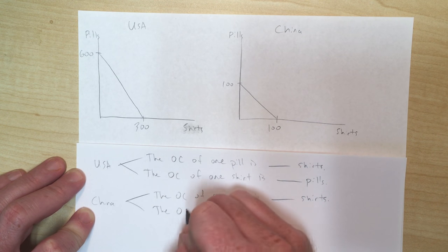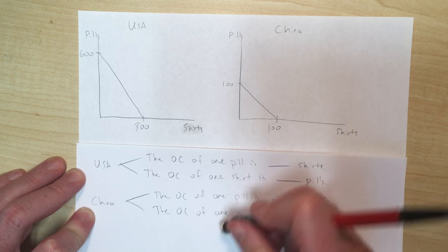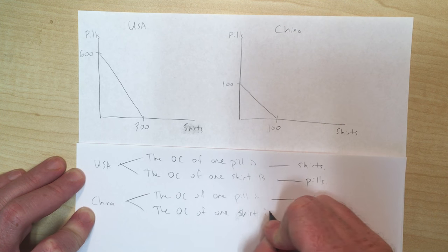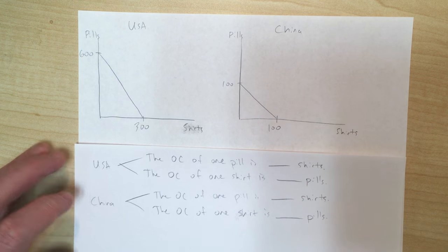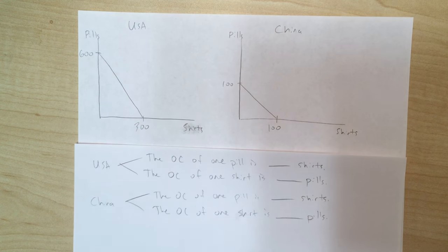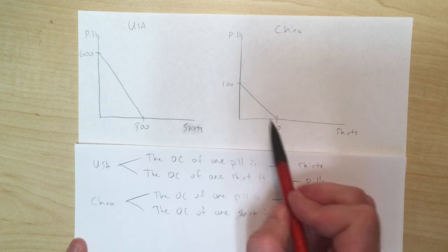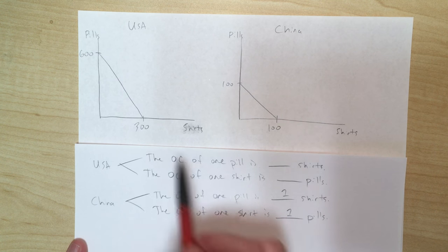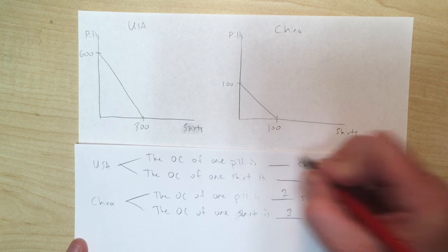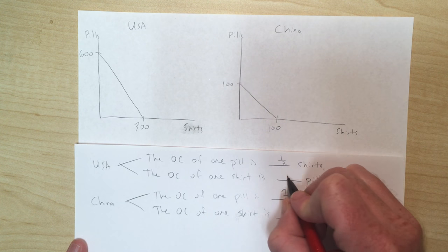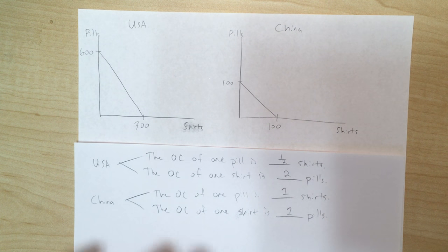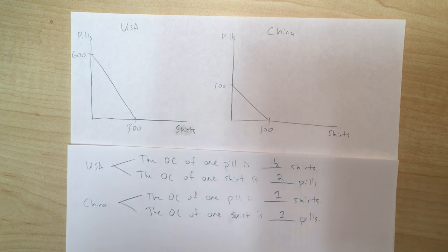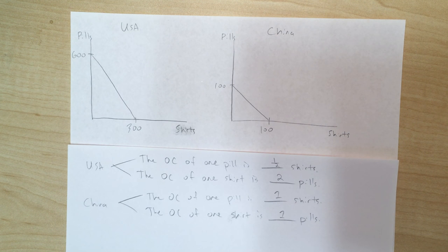I'm a big fan of being repetitive when solving things in math because it helps avoid mistakes, which is why I like to be thorough writing these out. The numbers here are pretty easy. For China it's a one-to-one relationship, so the opportunity cost of producing either good is one — every time they produce a pill they give up one shirt. For the US, every time they produce a pill they give up half a shirt, and every time they produce a shirt they give up two pills.